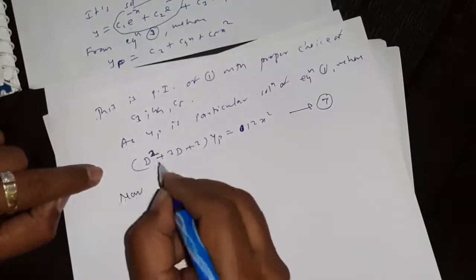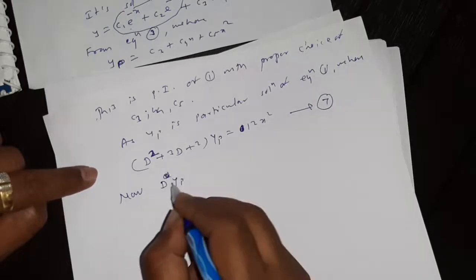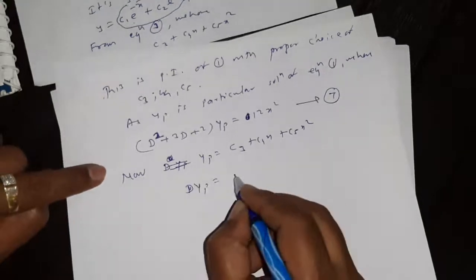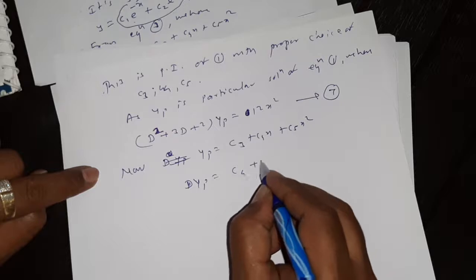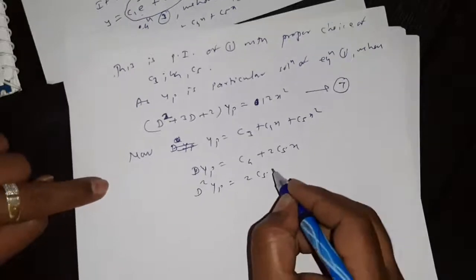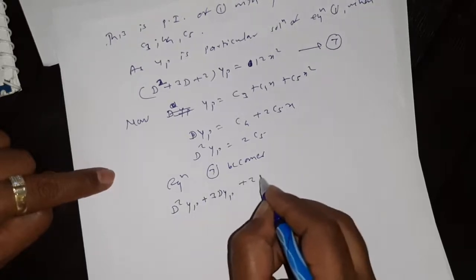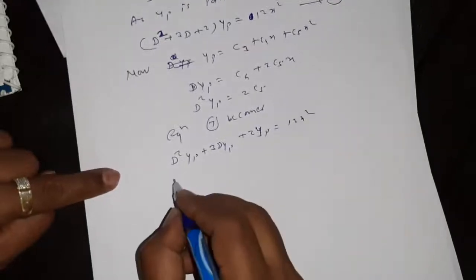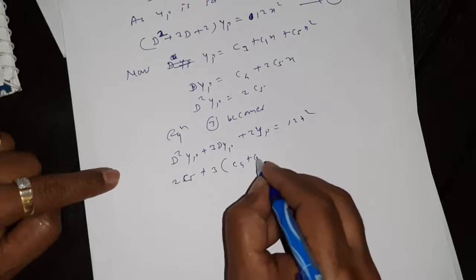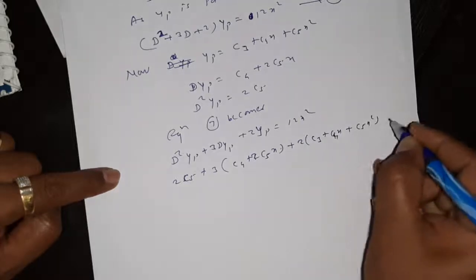Equation 7 becomes d²yp + 3·dyp + 2·yp equal to 12x². Substituting: 2c5 + 3(c4 + 2c5·x) + 2(c3 + c4·x + c5·x²) equal to 12x². Collecting terms: constant terms give 2c5 + 3c4 + 2c3; terms of x give 6c5 + 2c4; terms of x² give 2c5·x². The right-hand side is 0 + 0·x + 12x².